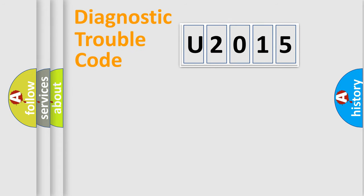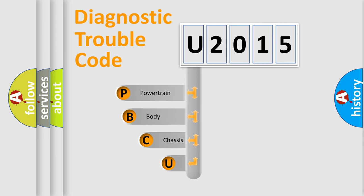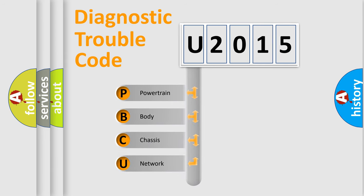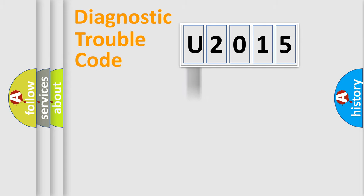Let's do this. First, let's look at the history of diagnostic fault code composition according to the OBD-II protocol, which is unified for all automakers since 2000. We divide the electric system of an automobile into four basic units: Powertrain, body, chassis, and network.